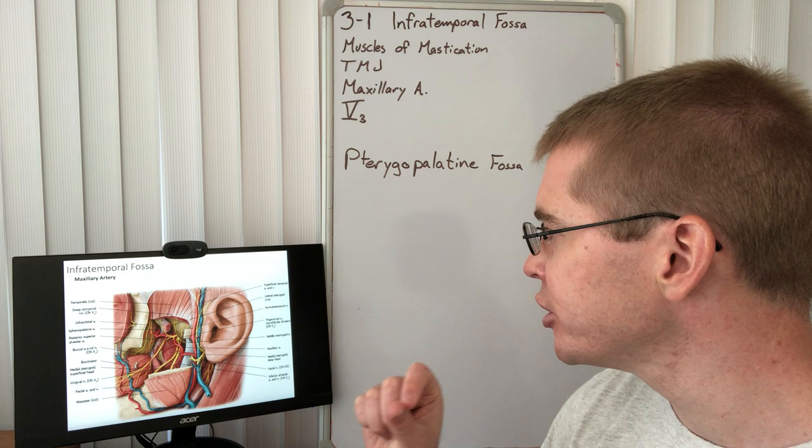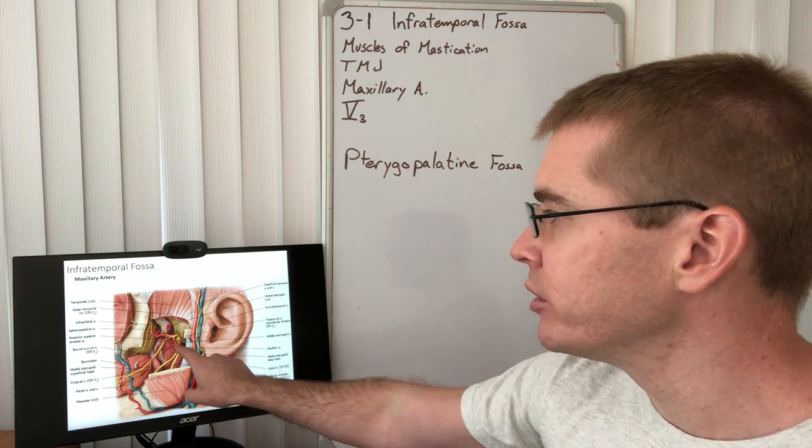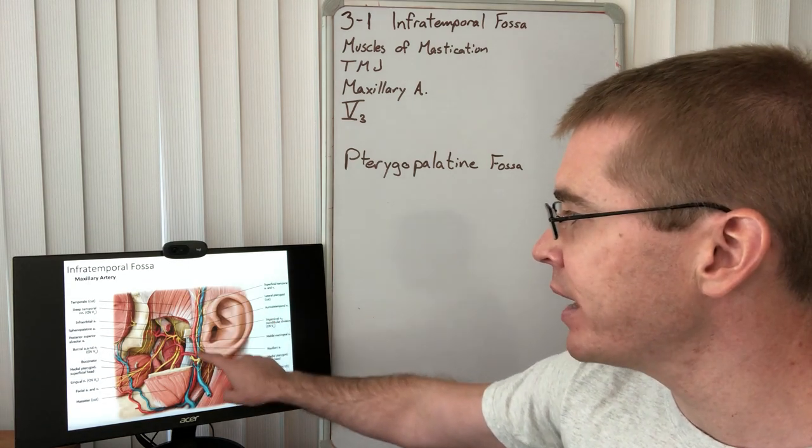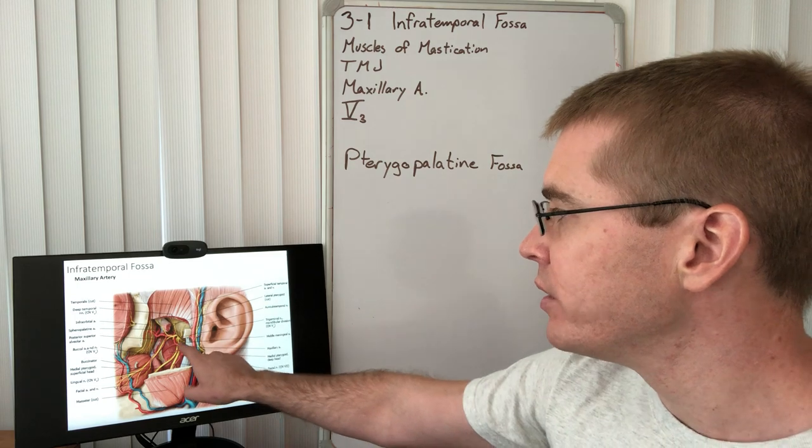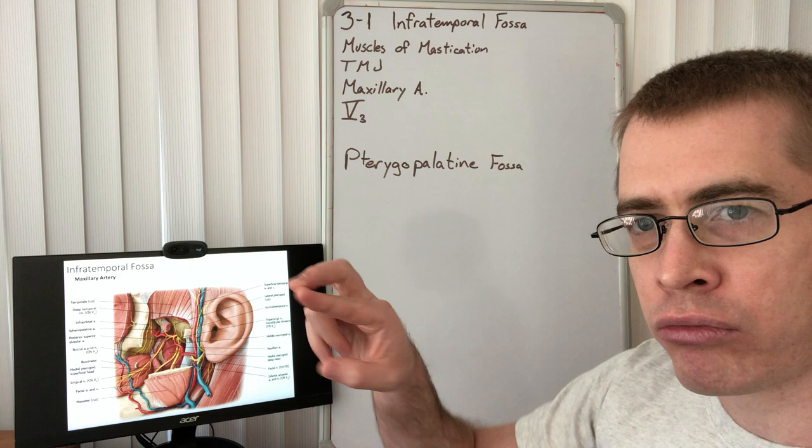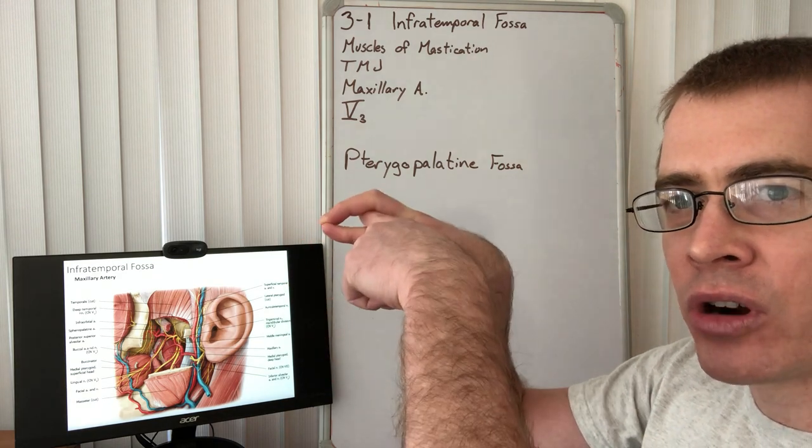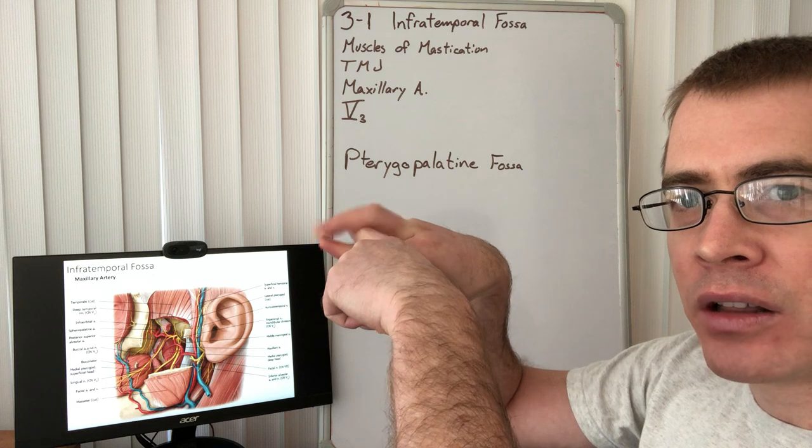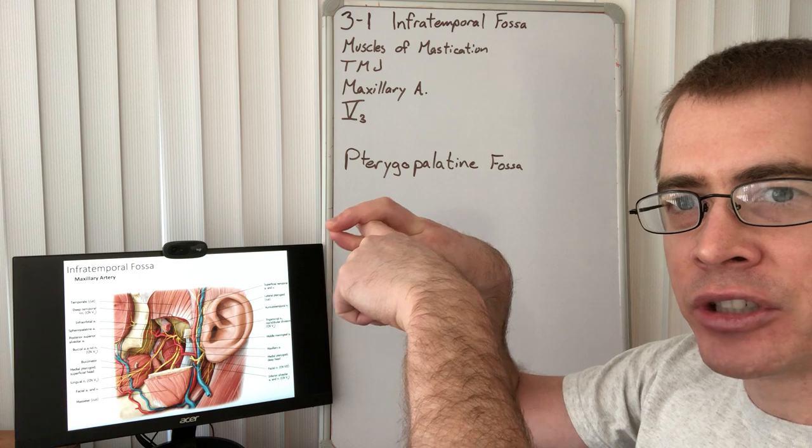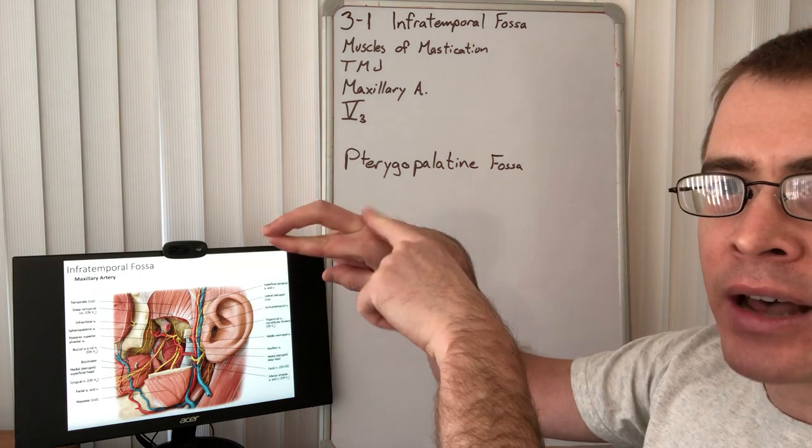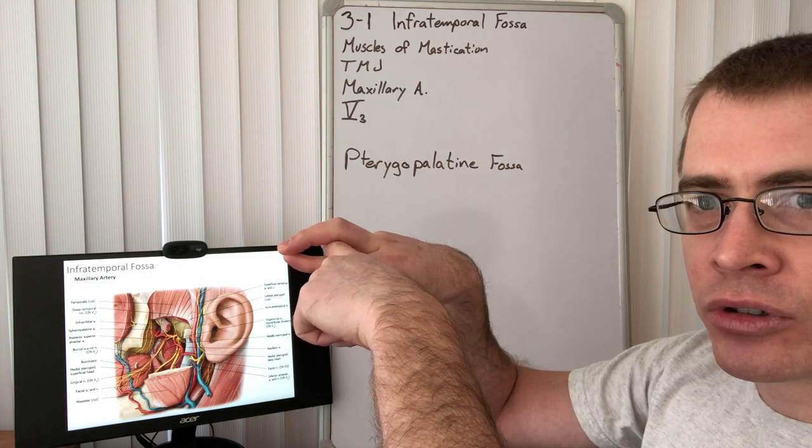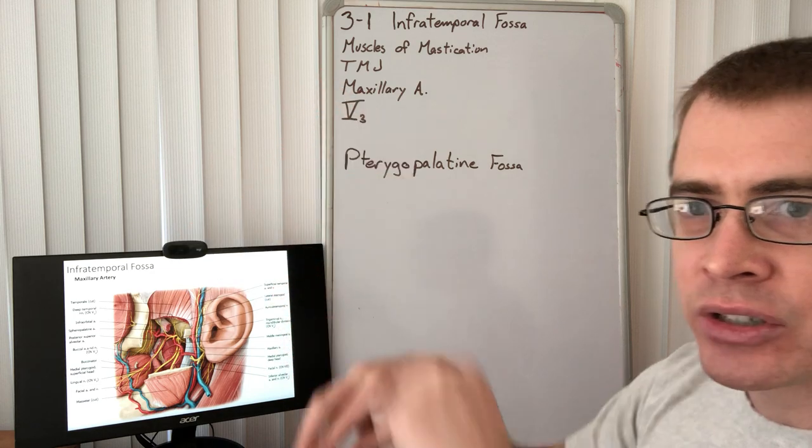An important consideration here is that the auriculotemporal nerve, a sensory nerve that heads to the side of the head, that auriculotemporal sensory nerve actually branches around middle meningeal artery. This is middle meningeal artery and these fingers here are the anterior and posterior divisions of auriculotemporal nerve. As soon as they come out of foramen ovale they branch around middle meningeal nerve and then rejoin and continue out to the exterior.